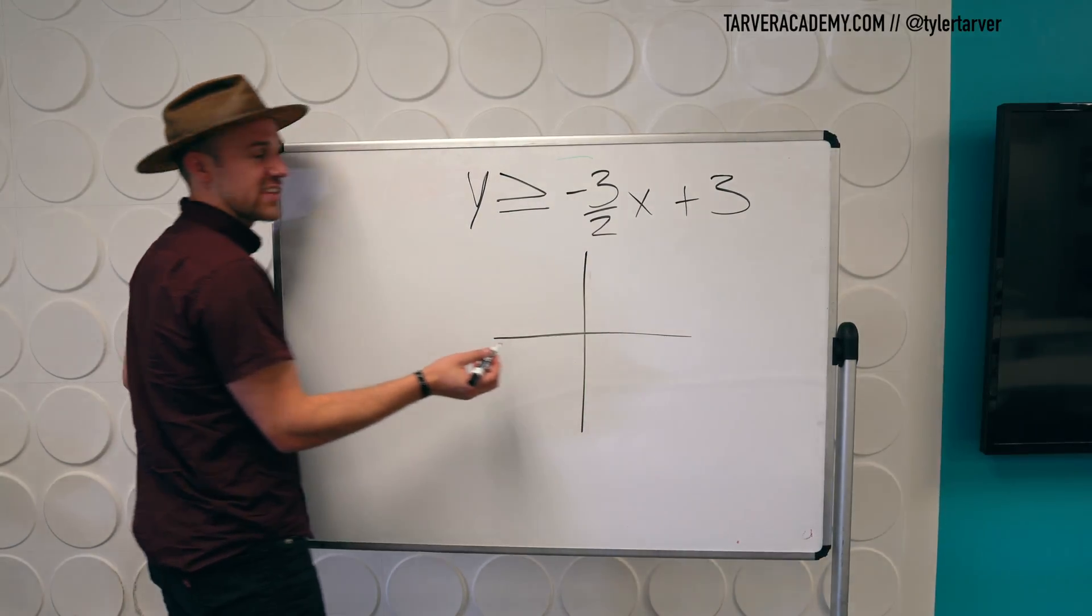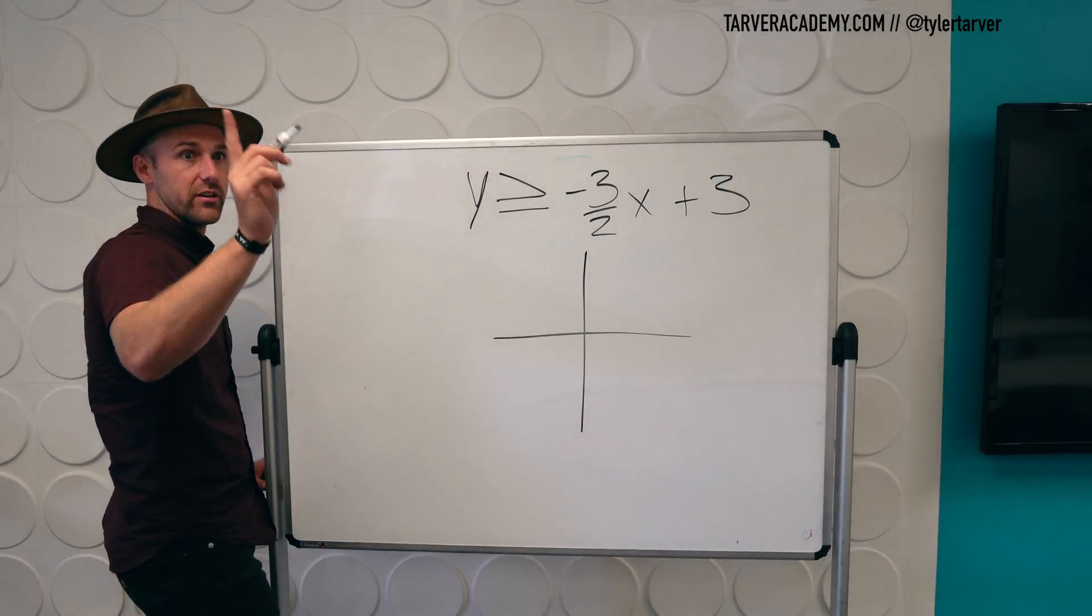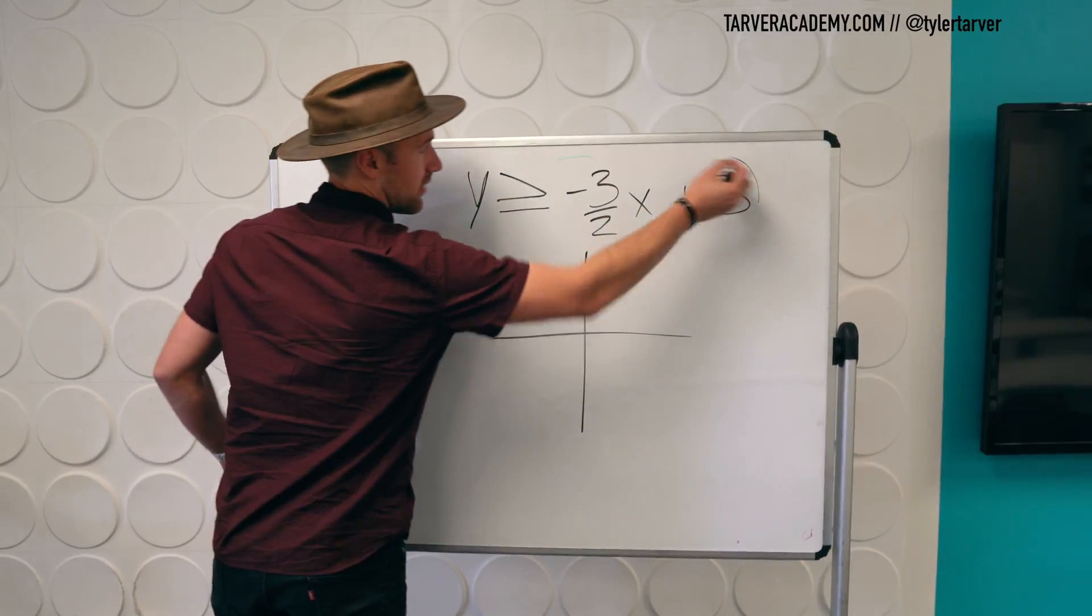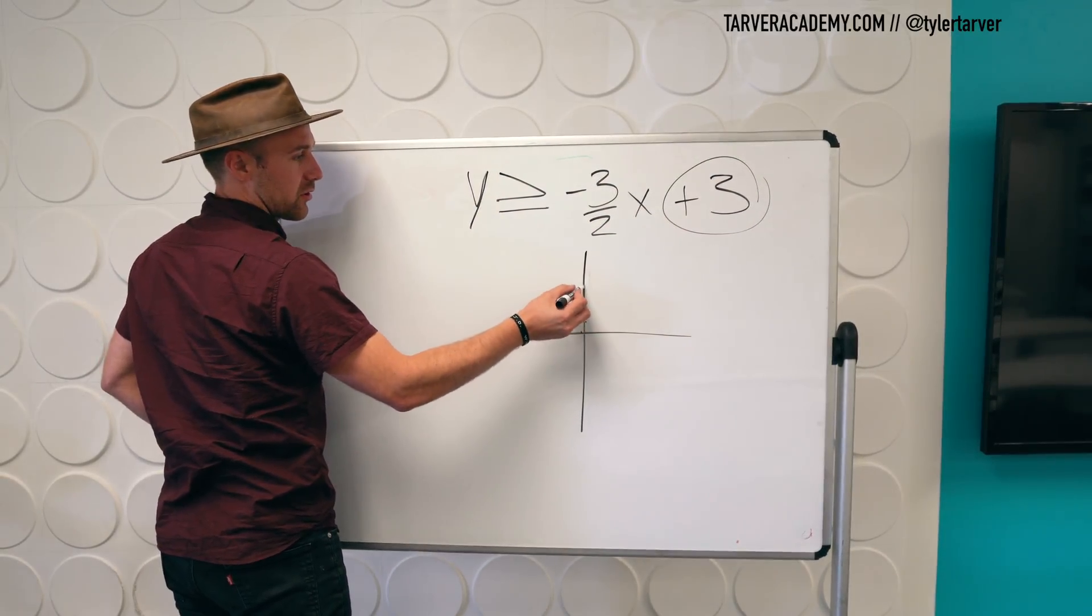Y intercept, which is at what location? Three. So the Y intercept is three. So one, two, three.